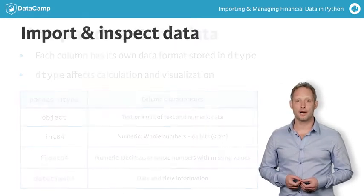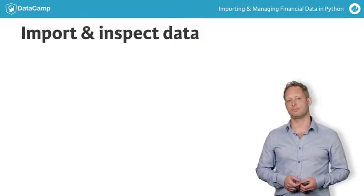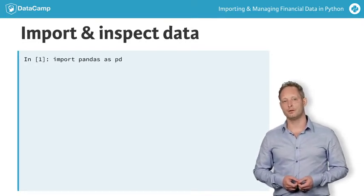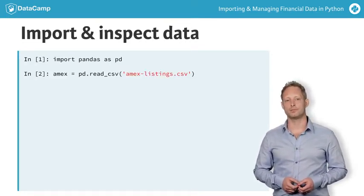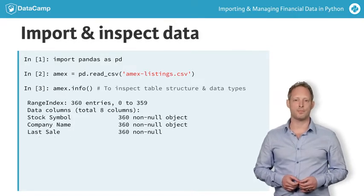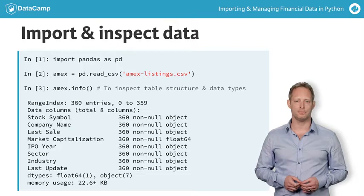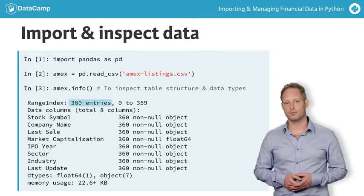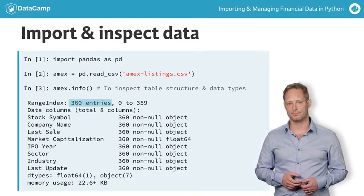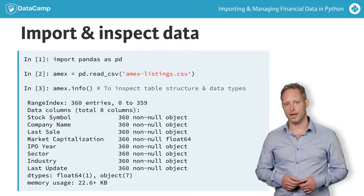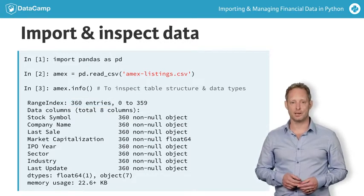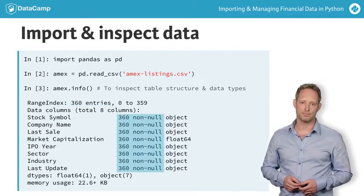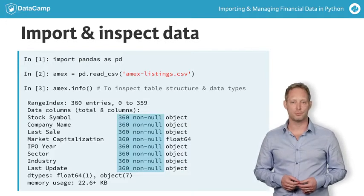You can use the Pandas read_csv method to import the data. Just tell read_csv where to find the file and assign the result to the variable amex. Then, call the DataFrame method .info to display useful information and identify some mismatches. The index has 360 entries, which means that the DataFrame has 360 rows. As expected, there are eight data columns, but each has 360 valid observations and no missing data points, as you would probably have expected.